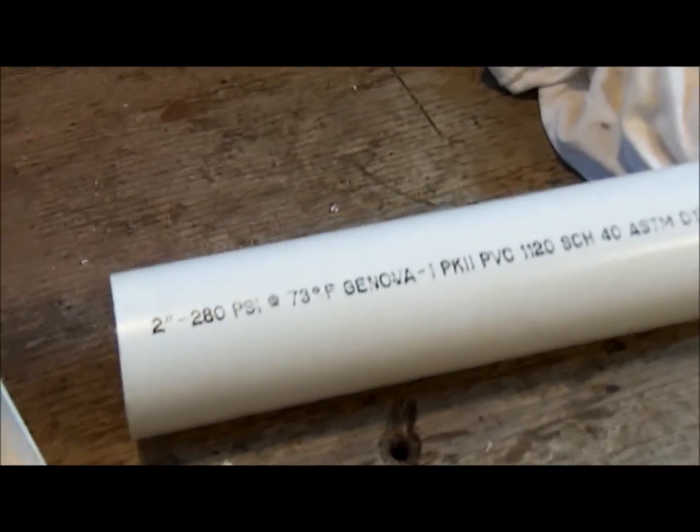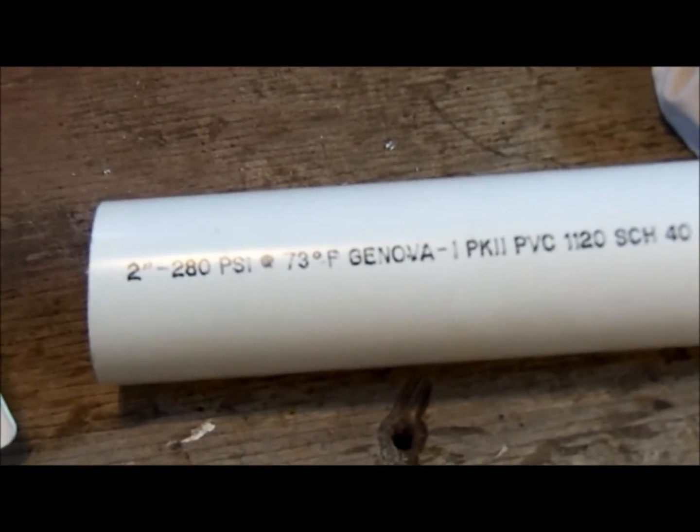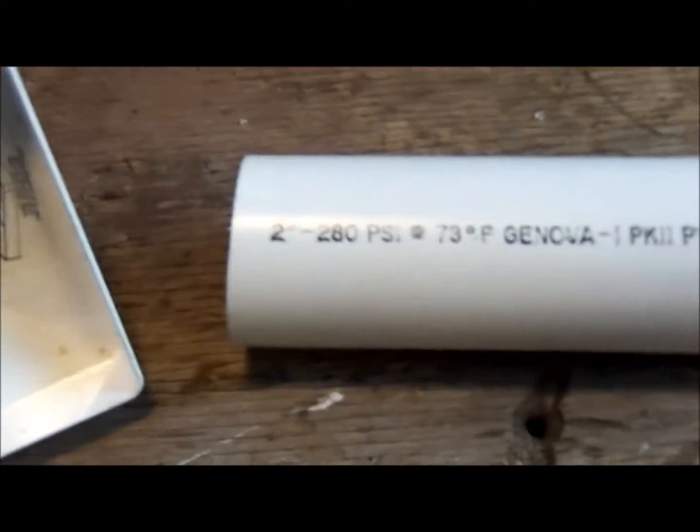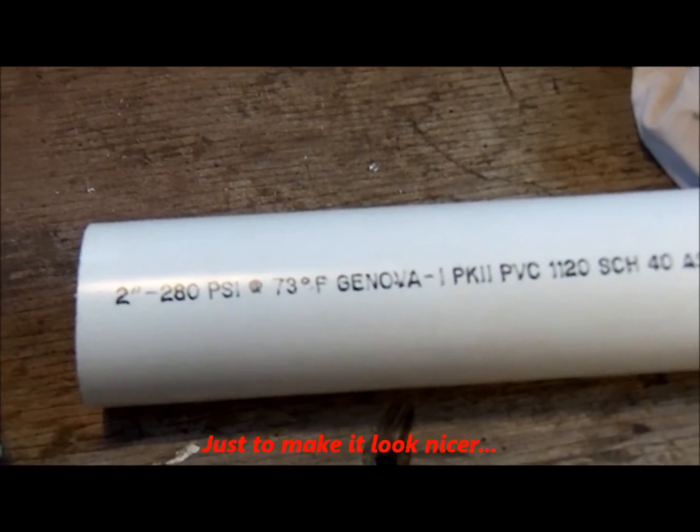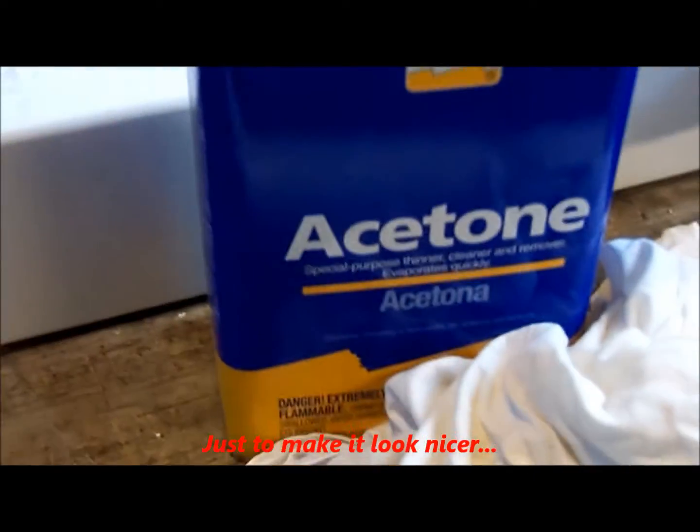I agree with Mike, taking the printing off the pipe is nice, but you can do it a whole lot easier than using SOS pads. If you take a little acetone with a cloth, it just wipes it right off. That saves you that effort.